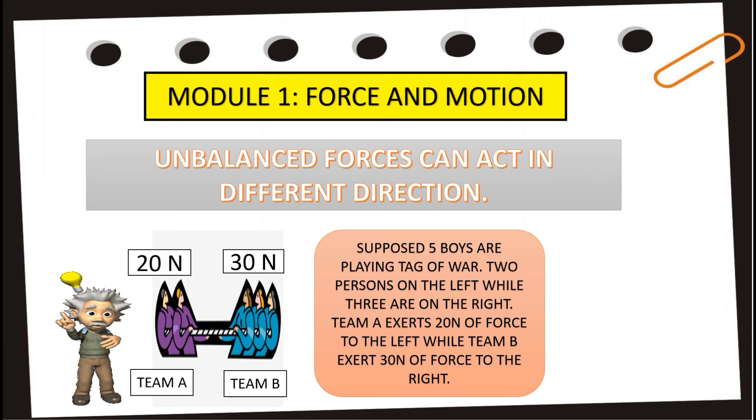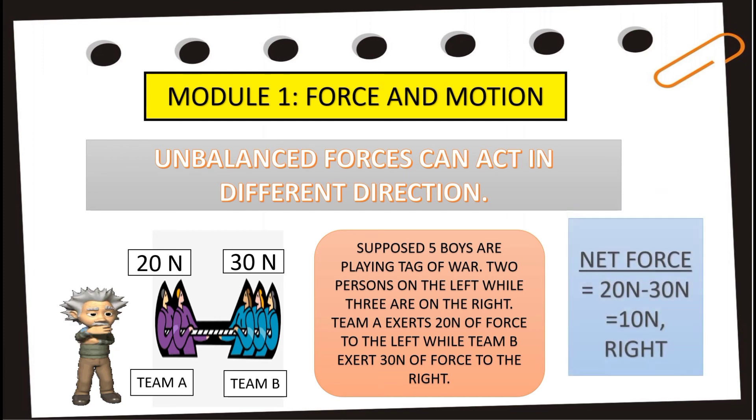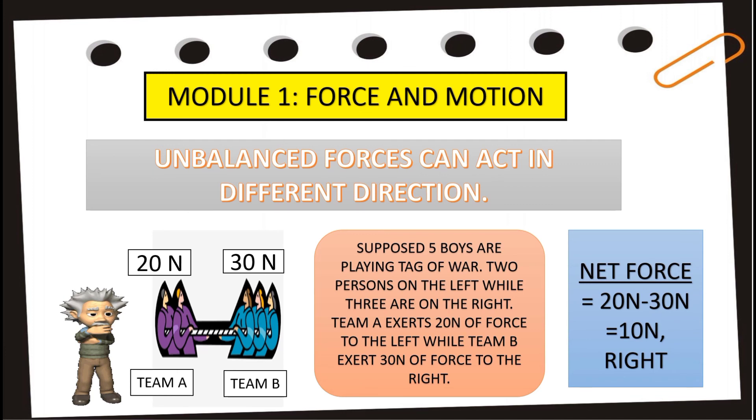Since both forces were applied on different directions, we have to subtract. So, we will have 20 newtons of force minus 30 newtons. Then, we will get negative 10. But take note that there's no negative force. So, simply, we will have 10 newtons of force. And definitely, the object will move to the right since team B exerted greater force than team A.